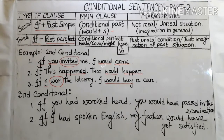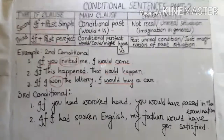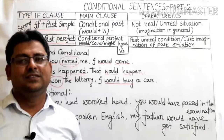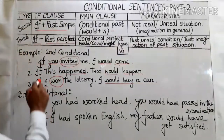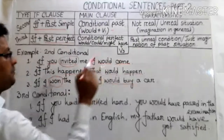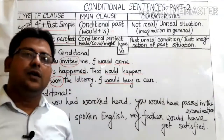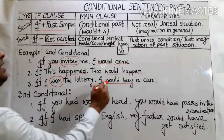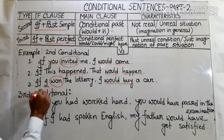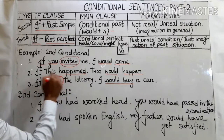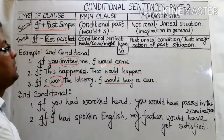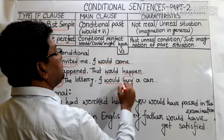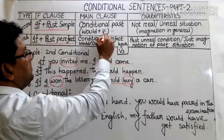In the second example: 'If this happened, that would happen' — this shows the original character of the second conditional. In the third example: 'If I won the lottery, I would buy a car.' After the subject I have used the past simple form, and in the main clause I have used 'would' plus the base form of the verb.